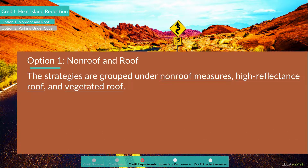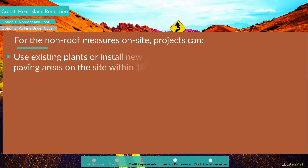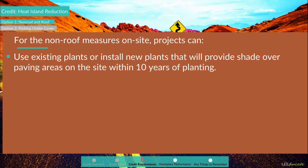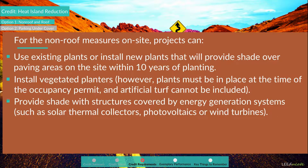The strategies are grouped under non-roof measures, high-reflectance roof, and vegetated roof. For non-roof measures on-site, projects can use existing or new plants that will provide shade over paving areas within 10 years of planting, install vegetated planters — plants must be in place at the time of the occupancy permit and artificial turf is excluded — or provide shade with structures covered by energy generation systems such as solar thermal collectors, photovoltaics, and wind turbines.